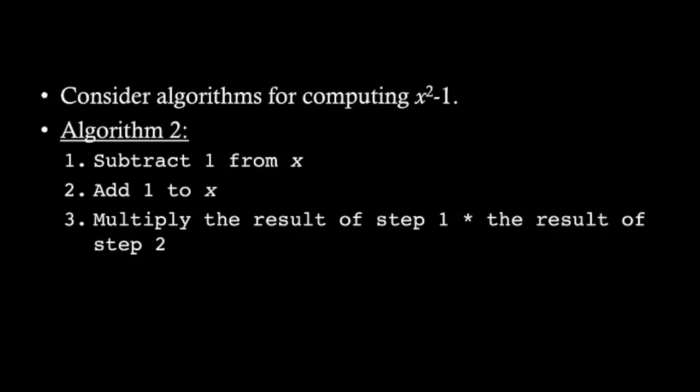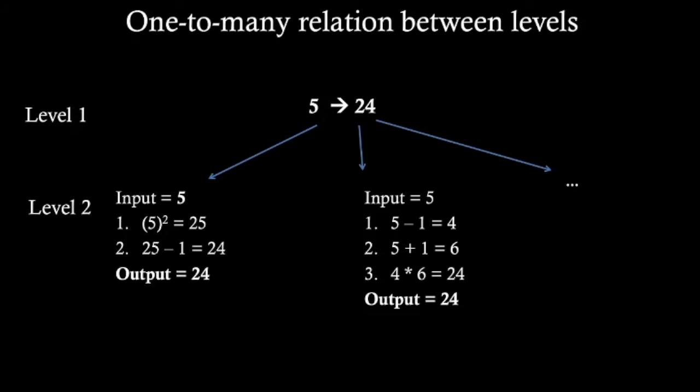Another algorithm is: subtract 1 from x, then add 1 to x, and multiply the result of step 1 times the result of step 2. At level 1, we have this mapping from 5 to 24, but we can arrive from that input to that output through many routes.